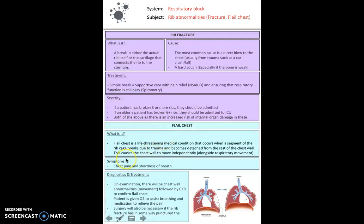Also, you need to know about flail chest. So this is a life-threatening condition, which causes the rib cage to break due to trauma. So essentially, you've already got a rib fracture. But it causes it to become completely detached from the rest of the chest wall. And this causes the chest wall to move independently, so it's quite easy to spot in terms of diagnosis because the chest wall is moving abnormally with the person breathing. The patient will also be in a lot of pain in their chest area and they'll have shortness of breath. Usually, you'd give oxygen to assist the breathing and medication to relieve the pain. And as well, surgery will also be necessary if the rib has punctured the lung underneath.